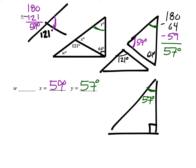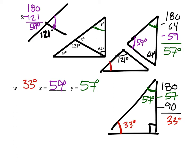Now that we know that one, solving for W, we're going to use the big triangle. We take the 180, subtract the 57, and also the 90 degrees — and behold, 33 degrees. There was one more angle we could have solved for, not that it asked us to: that orange angle would just be 90 minus 64, which is 26 degrees, if it were asked — because they may ask on the test.